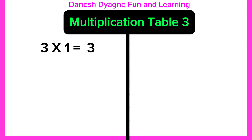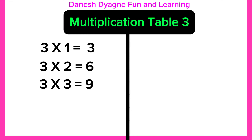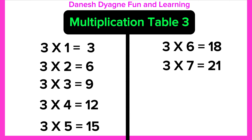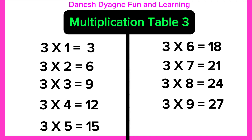3 times 1 equals 3. 3 times 2 equals 6. 3 times 3 equals 9. 3 times 4 equals 12. 3 times 5 equals 15. 3 times 6 equals 18. 3 times 7 equals 21. 3 times 8 equals 24. 3 times 9 equals 27.